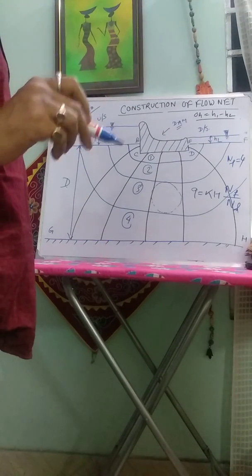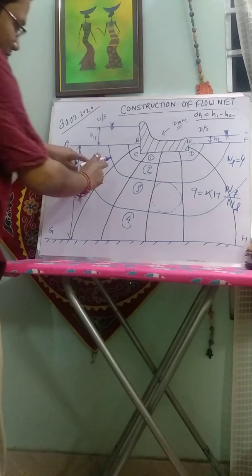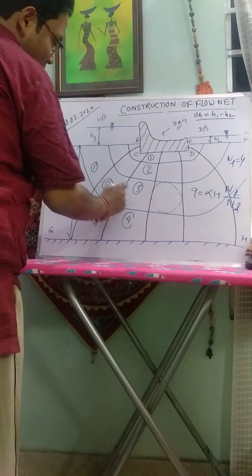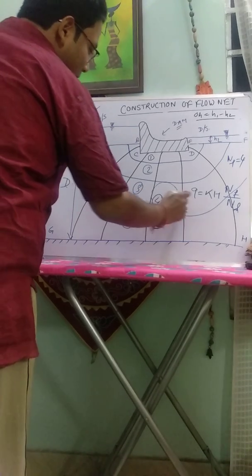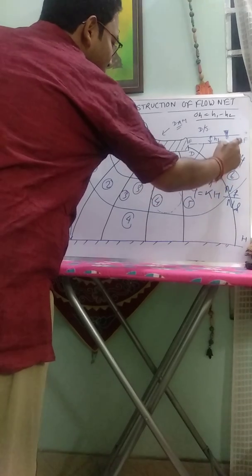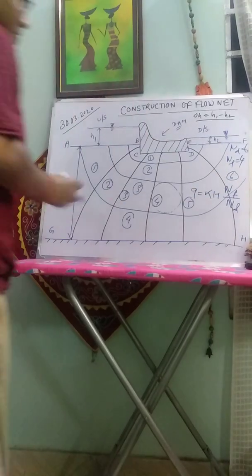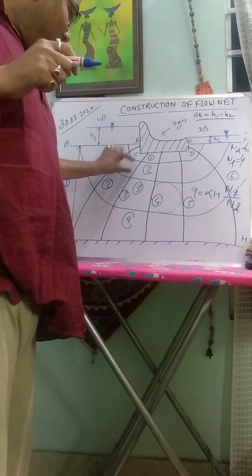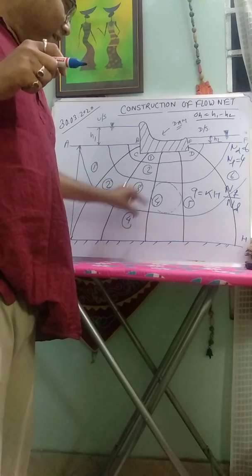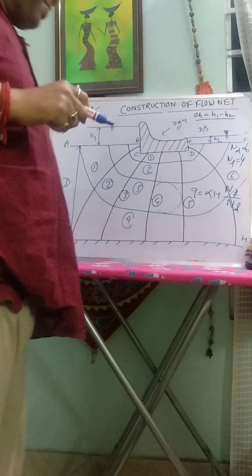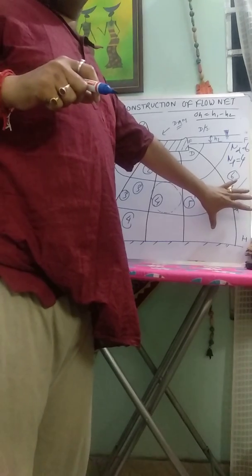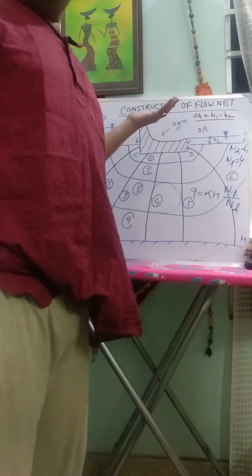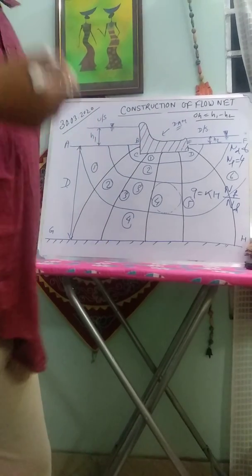And nd is equipotential drop. Count them: 1, 2, 3, 4, 5, 6. This means nd is 6. The equipotential lines are 1, 2, 3, 4, 5, 6. Now, put all data and you can easily find out the quantity of seepage from the flow net.